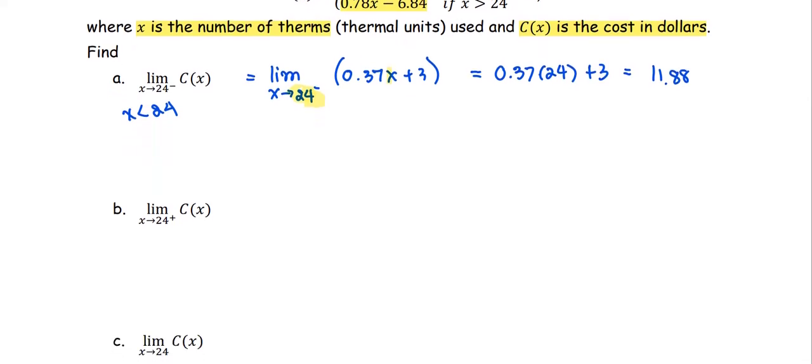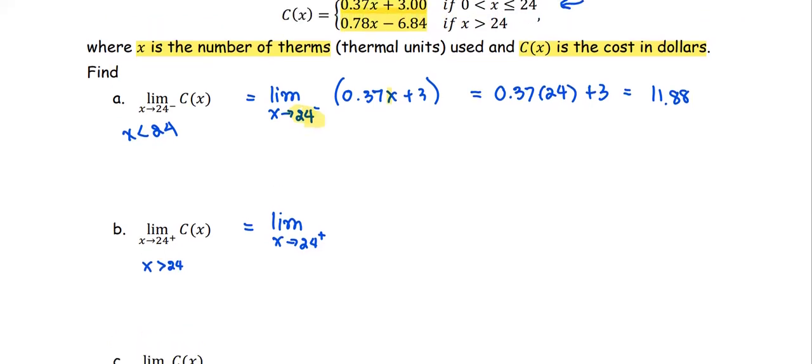The next part is similar. We're going to find the limit as x approaches 24 from the right. That means we're going to look at the function defined for x greater than 24, which is 0.78x minus 6.84.